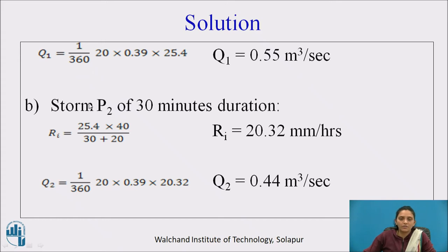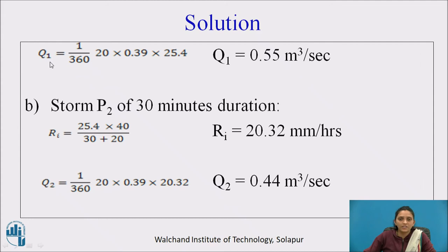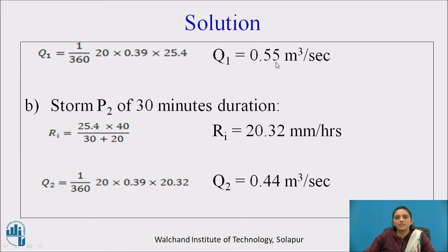Find the discharge for storm P1. Since discharge is required in m³/s and rainfall intensity is in mm/hour, use the formula Q = (1/360) × A_i × R_i. Substituting all calculated parameters gives discharge Q1 = 0.55 m³/s.